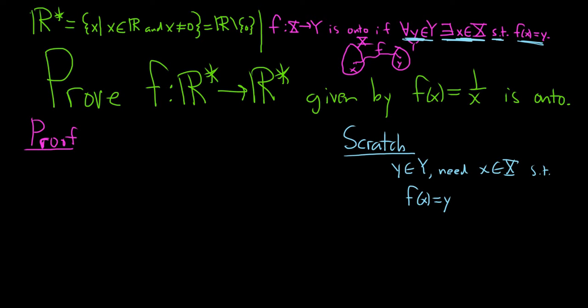So f of x is 1 over x, and we're trying to find x. So we have 1 over x equals y. So let's solve this for x by multiplying by x. These cancel, so we get 1 equals yx. So now we can divide by y, and that's allowed, everything here is non-zero. So we get x equals 1 over y. And that will make sense because y is not zero, so everything is okay.